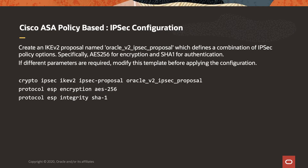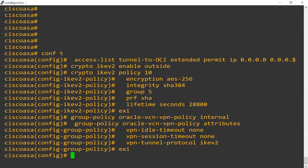Since we've chosen to use IKE version 2, we need to define the transform sets. IKE version 2 has a proposal where those transform sets are contained. We're going to determine the encryption level and also the integrity for IKE version 2, so I'm going to do that here.